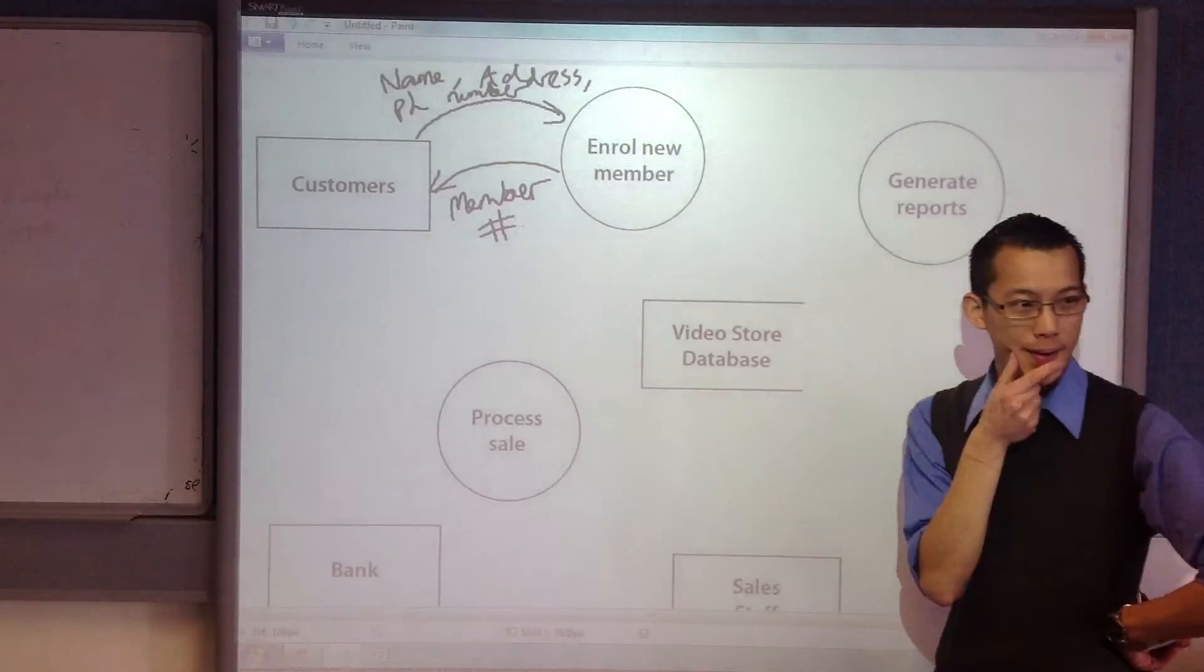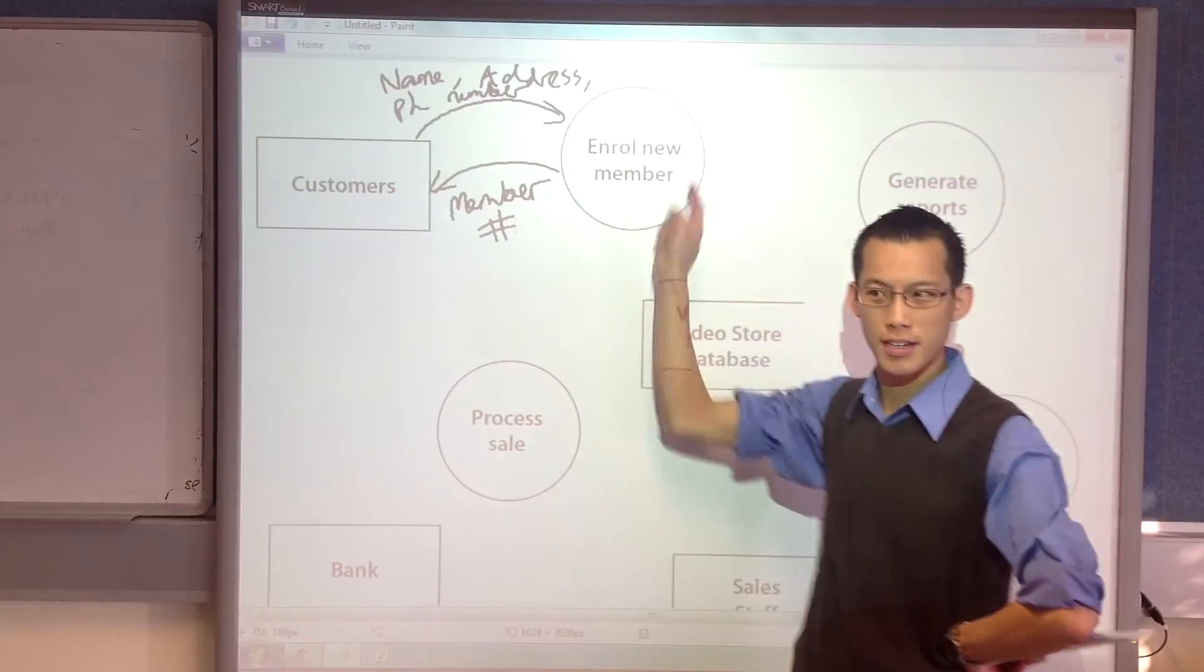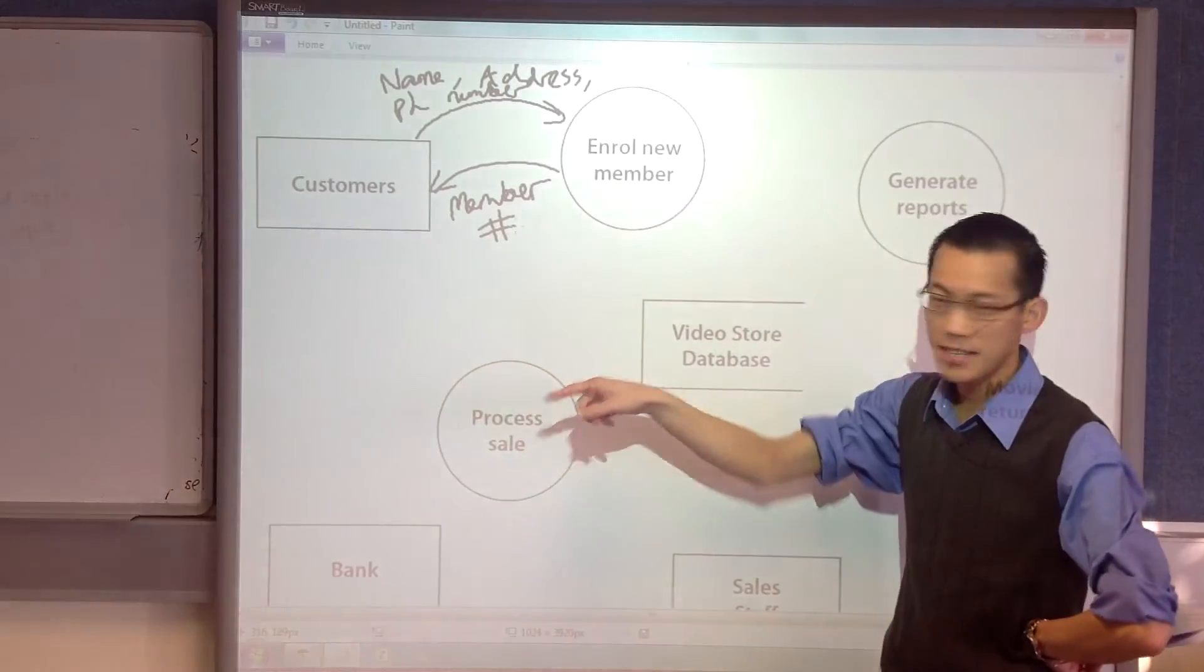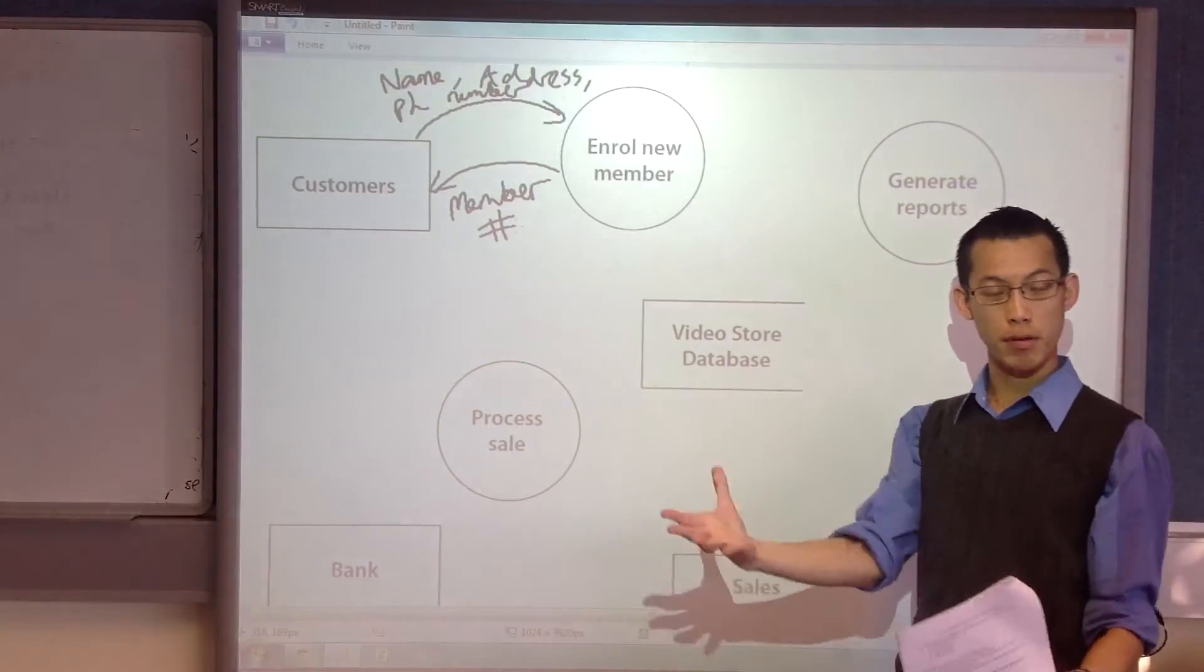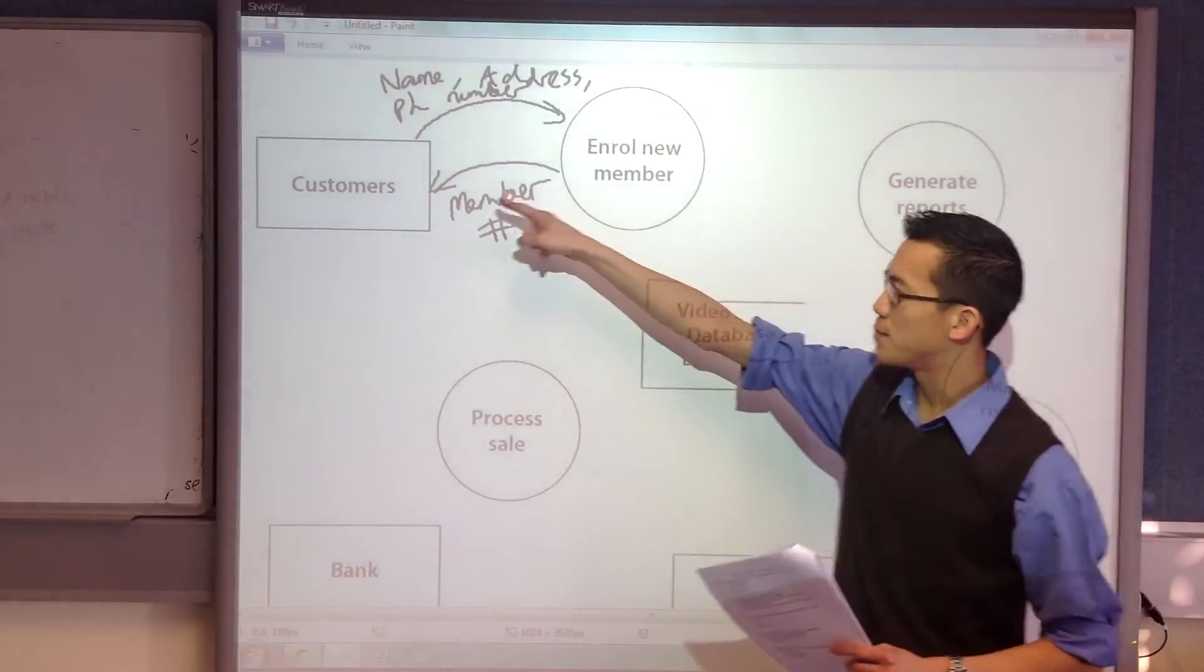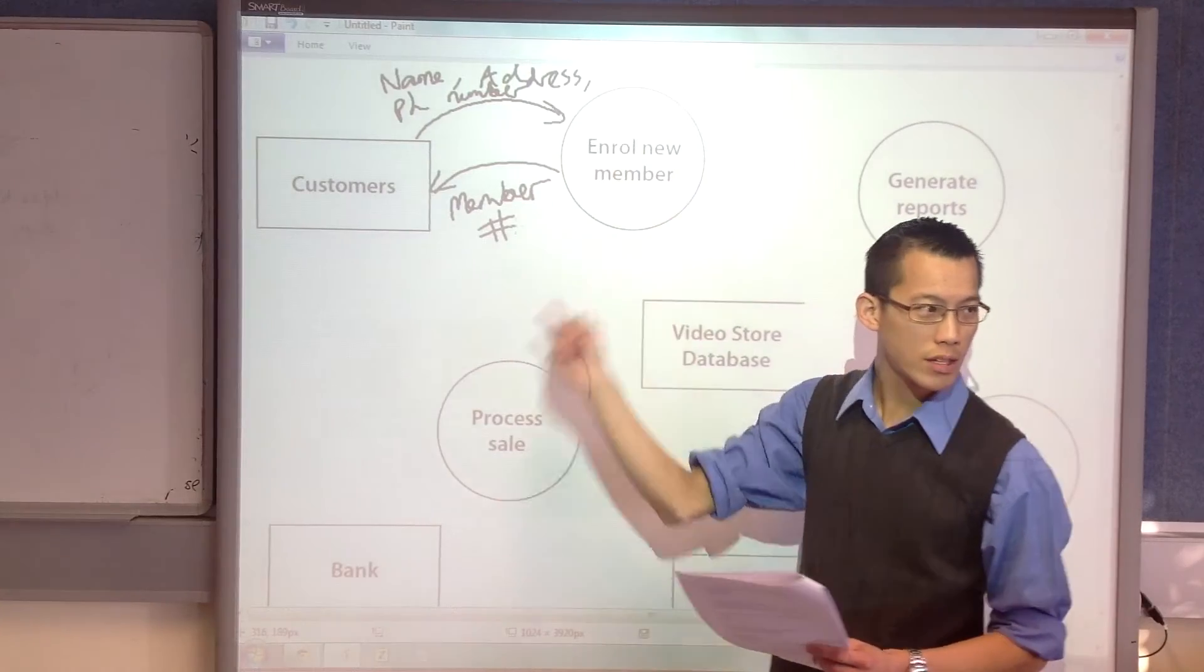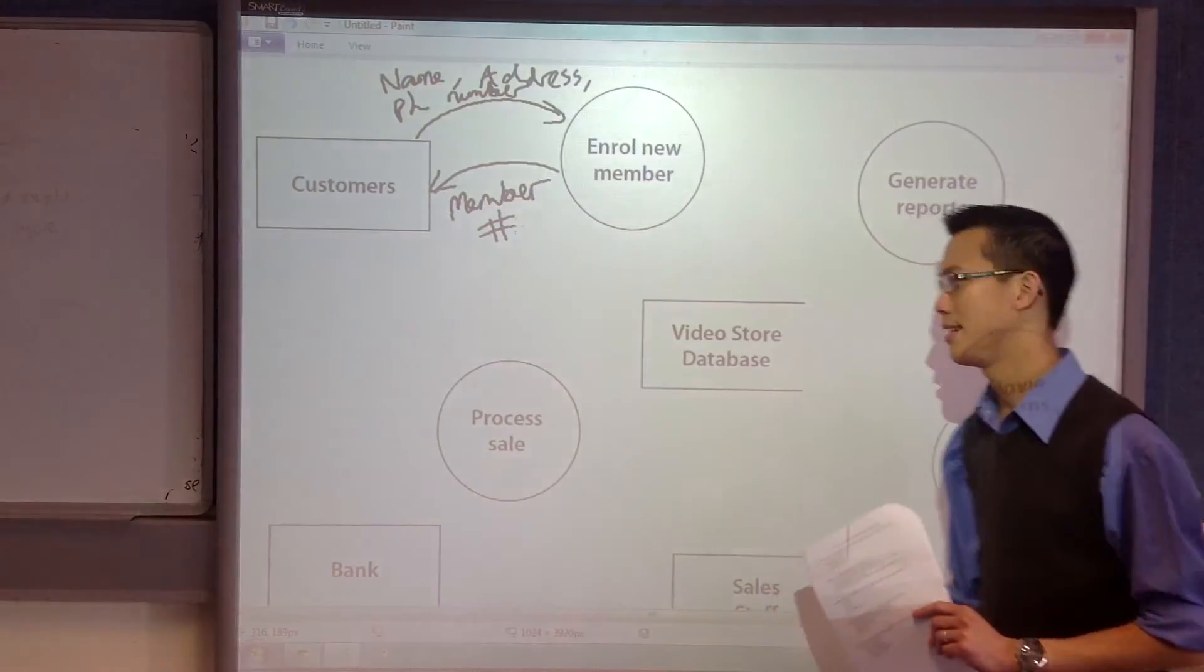Now, the enrollment of the new member, right? That process, it doesn't just get data from the customer and then send it back. It has to interact with this vStore, this program, which this shop has. So, it's not just between the customer and this process. Where would it go? Where would it send some data to? Any suggestions?